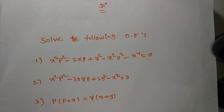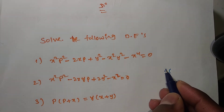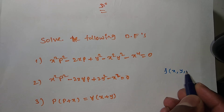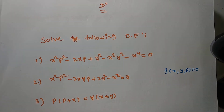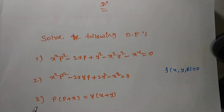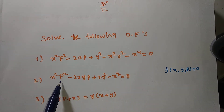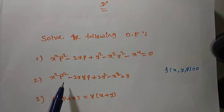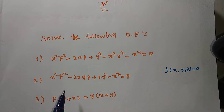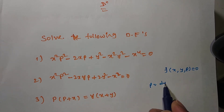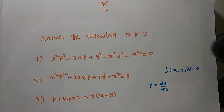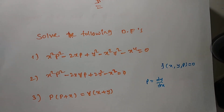By observation of these problems, they are given commonly in terms of x, y, and p. So you can say this is a function f(x, y, p). Now observe the degree of p — the degree of p is 2. So these problems belong to degree 2. If the degree is not equal to 1, these problems are first order but not first degree, since p = dy/dx.